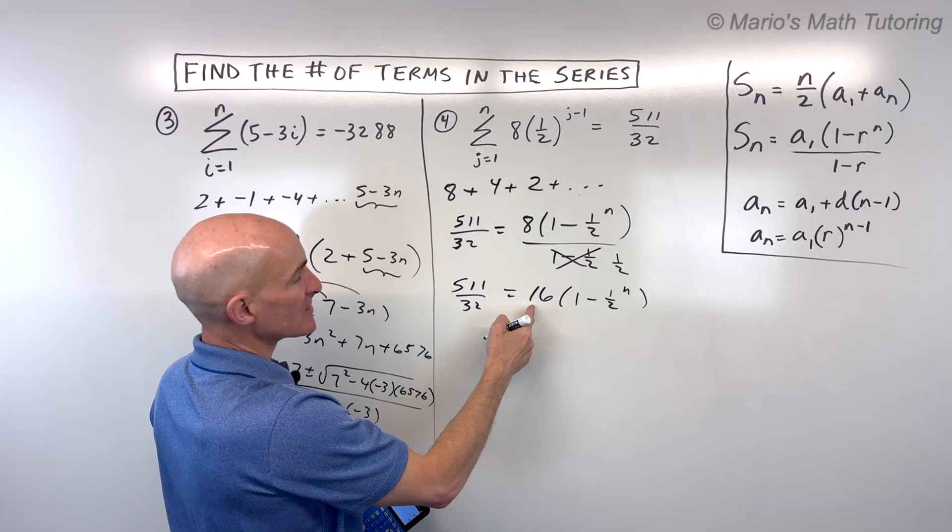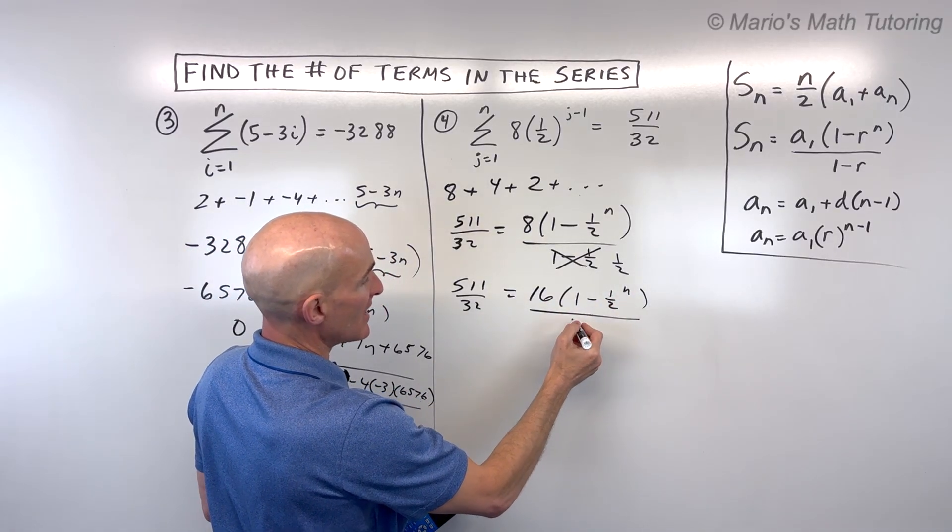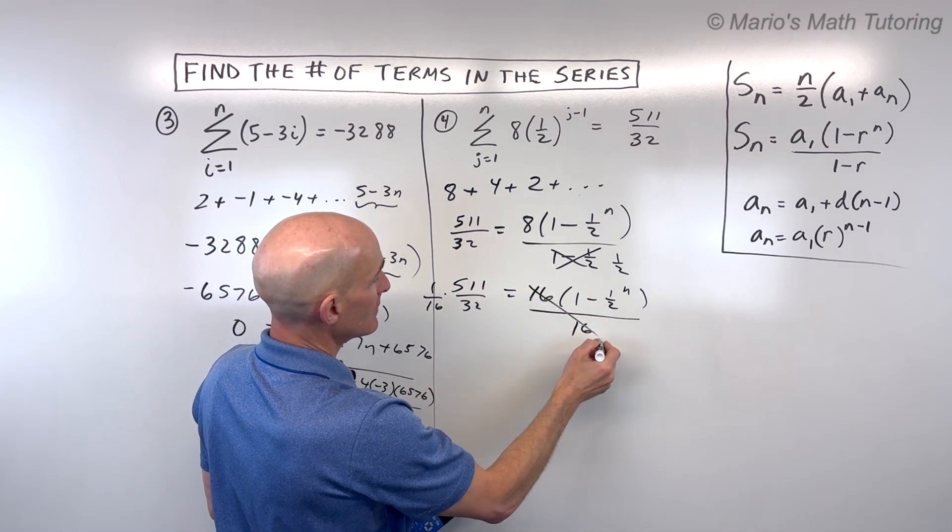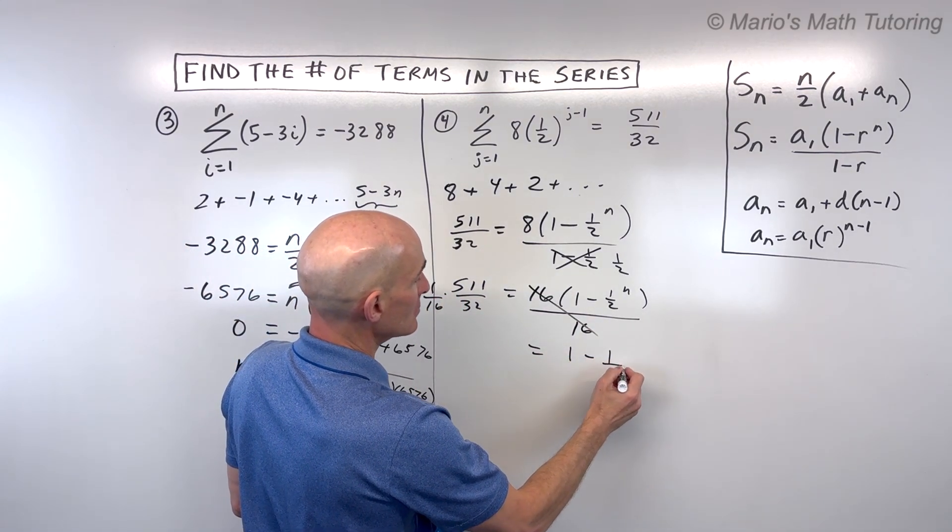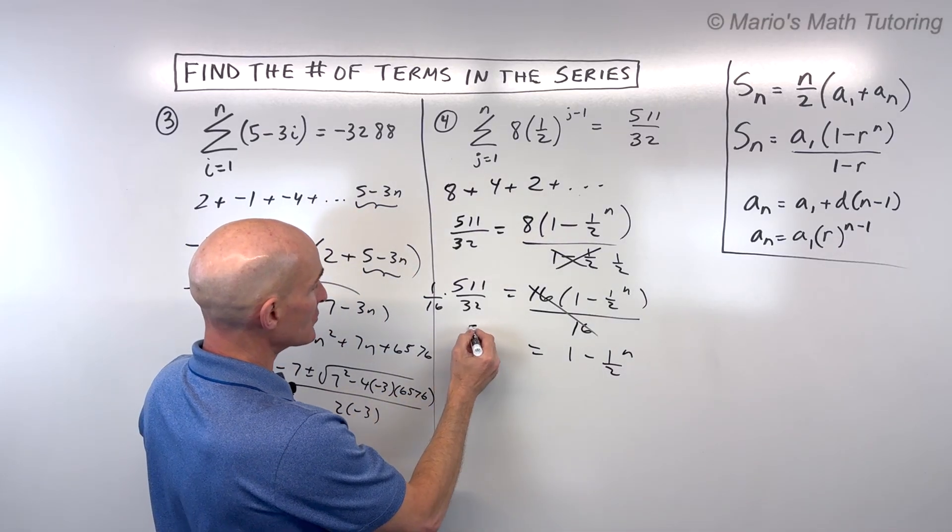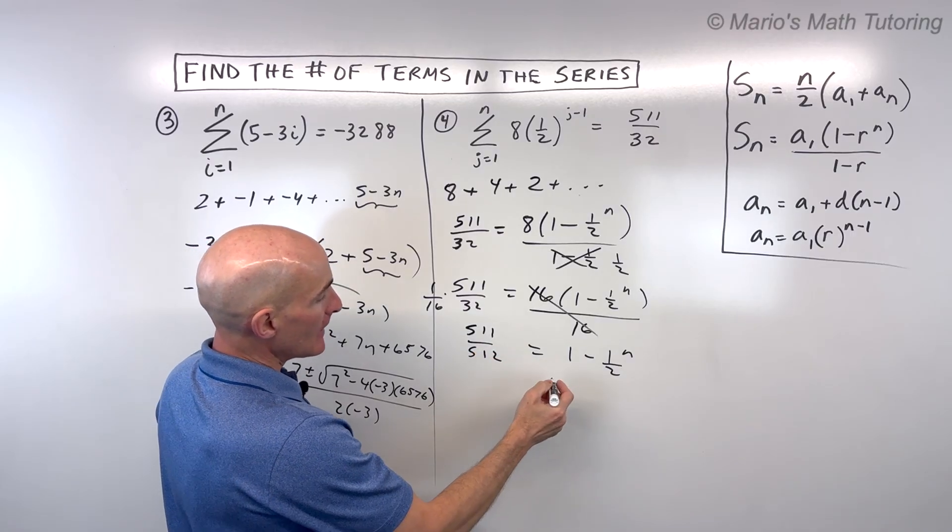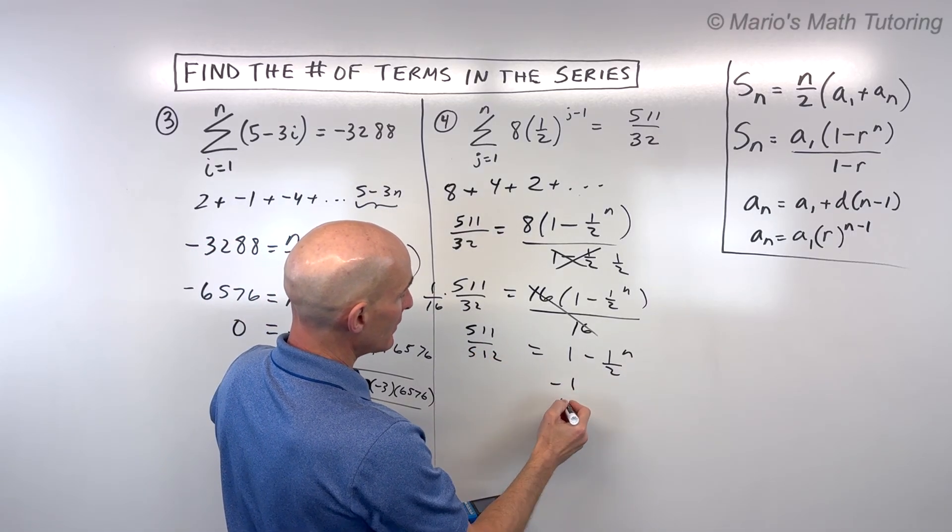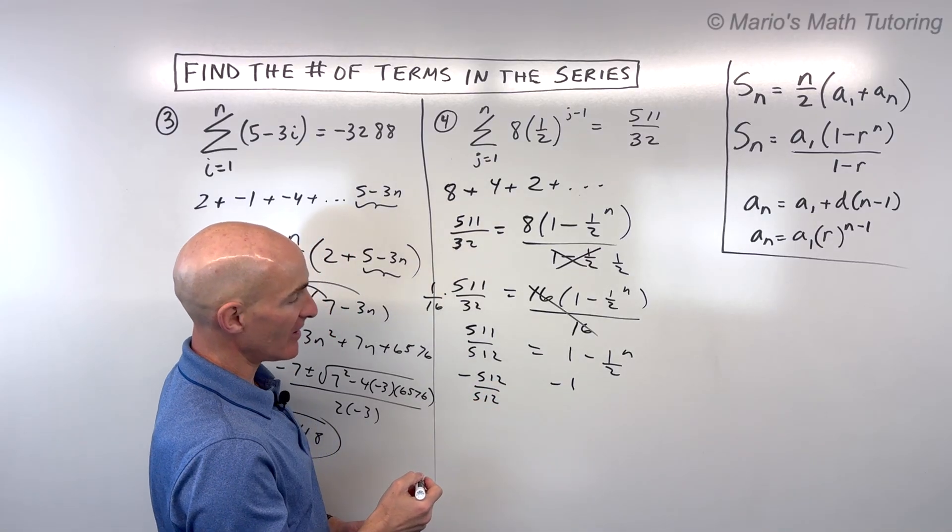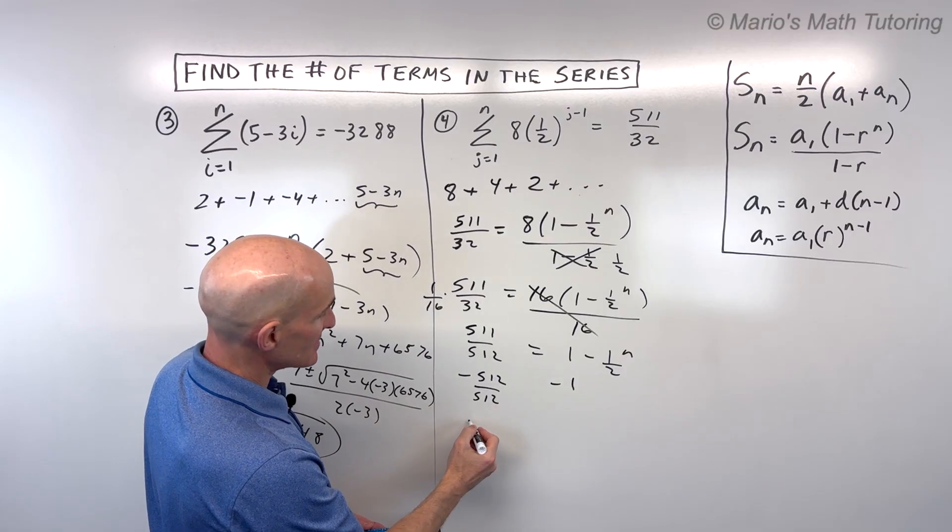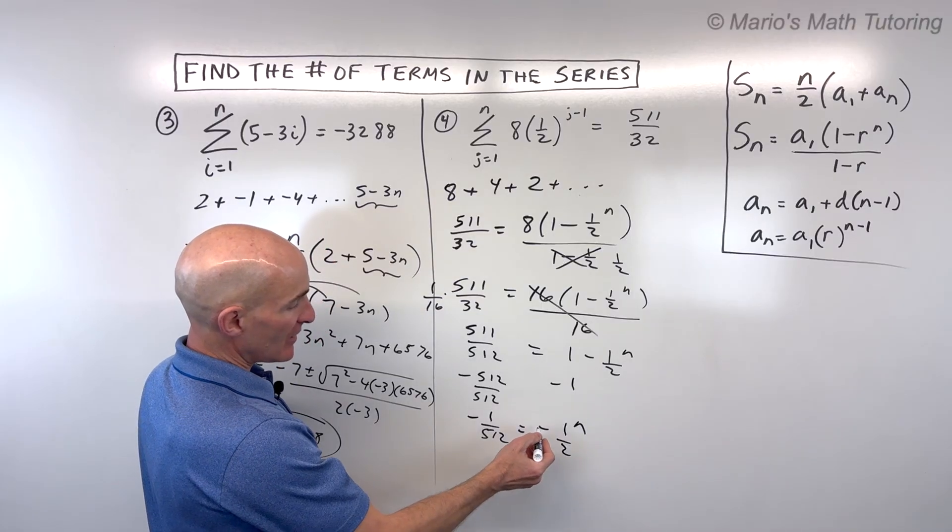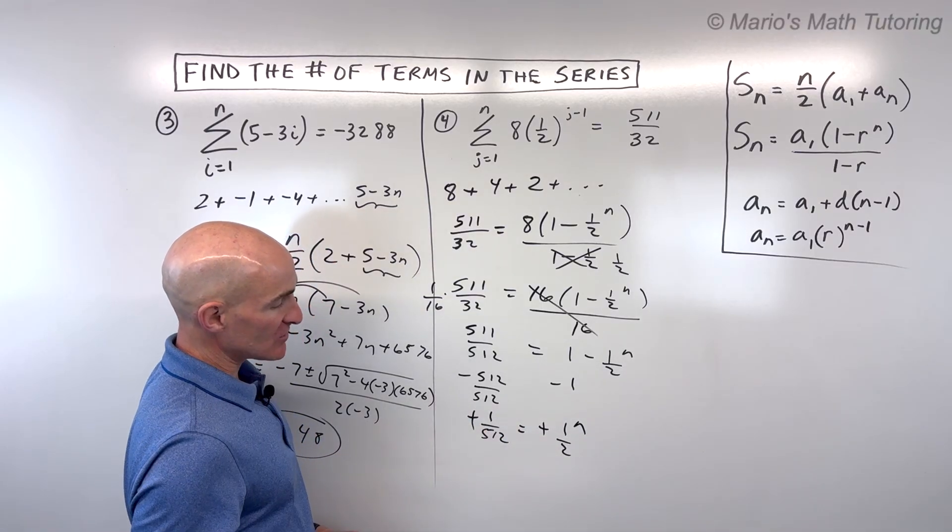And now I'm going to divide both sides by 16. Again, we're working from the outside in towards n here. So divide by 16, which is like multiplying by 1 sixteenth. So that comes out to, let's see, so what's 16 times 32? 512. So we have 511 over 512. If we subtract 1, which is really like subtracting 512 over 512, that gives us negative 1 over 512 equals negative 1 half to the n. If I multiply both sides by negative 1, that gets rid of the negatives there.